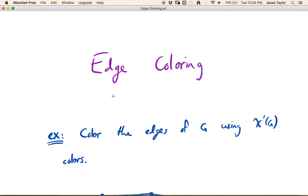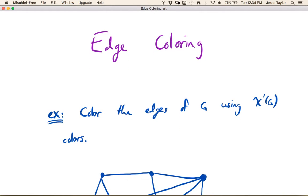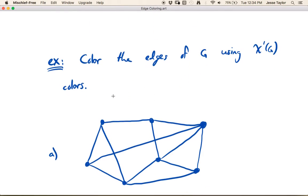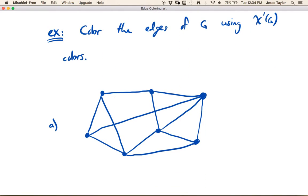We don't really have an algorithm that tells us 'do this and you get the best coloring.' In fact, coloring graphs is a hard problem, so I just want to give you some mental tools to help think about it. Let's do a couple of examples: color the edges of G using χ' (chi prime), that's the chromatic index of G colors.